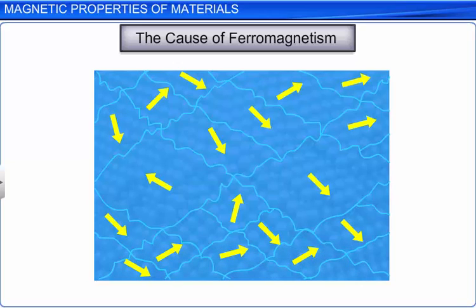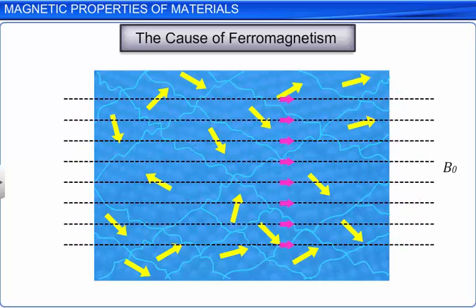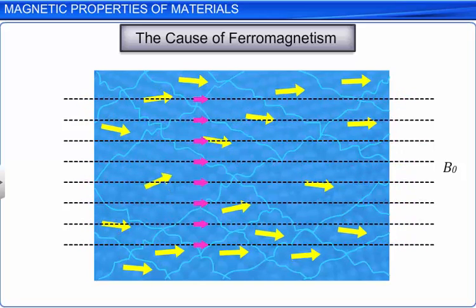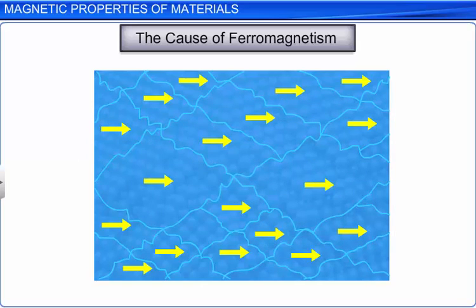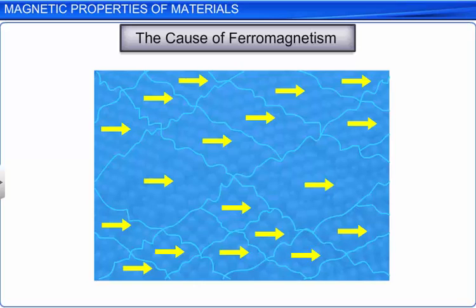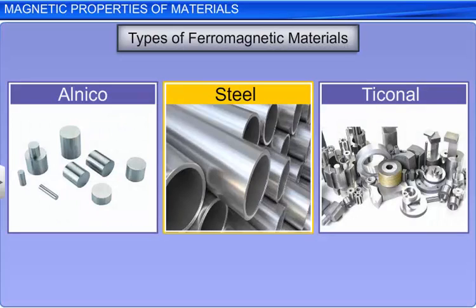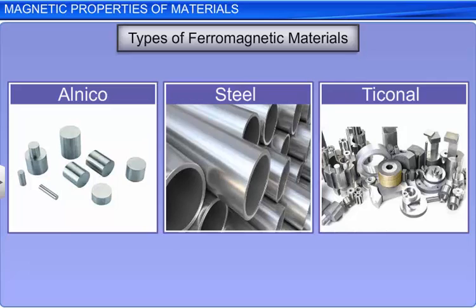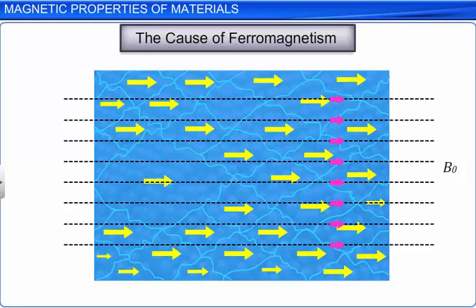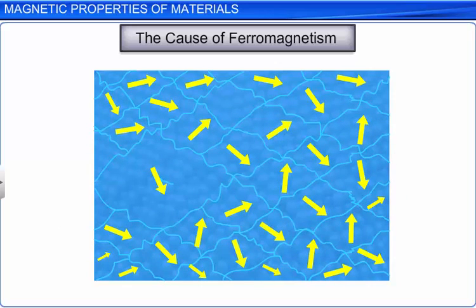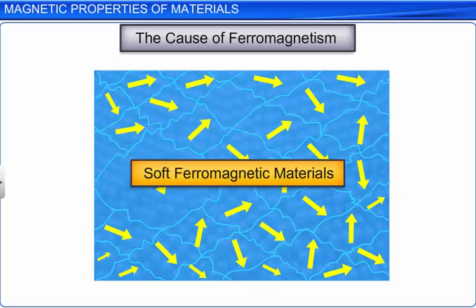When a bar of ferromagnetic material is placed in an external magnetic field of induction B0, the magnetization of the domains orients in the direction of the applied magnetic field. When the external magnetic field is removed, some ferromagnetic materials can retain the magnetization; such materials are called hard ferromagnets or hard magnetic materials. These materials are used to prepare permanent magnets. There are some other materials which lose their magnetization when the external magnetic field is removed; these are called soft ferromagnetic materials and they are used to prepare temporary magnets.